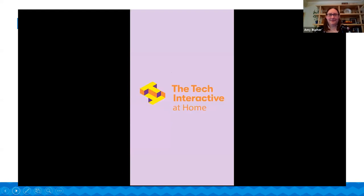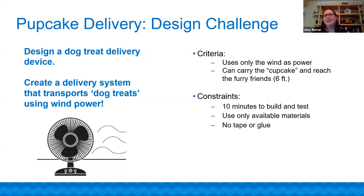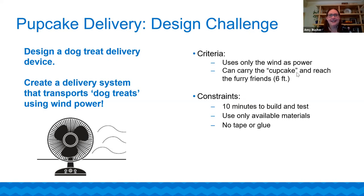Now we have our challenge. We're going to be building a Pupcake delivery device — design a dog treat delivery device that is wind powered. Create something that transports dog treats using wind power. The criteria and constraints are: you can only use the wind to power your device; it has to carry the treat six feet — the standard social distancing length to reach your furry puppies; you only have 10 minutes to build and test; use only available materials; and we're encouraging you not to use tape or glue. The challenge is to use other fasteners for your device.